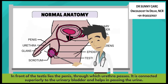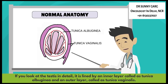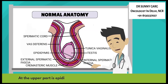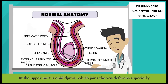The testes is connected superiorly to the urinary bladder and helps in passing urine through the urethra. Looking at the testes in detail, it is lined by an inner layer called the tunica albuginea and an outer layer called the tunica vaginalis. At the upper part is the epididymis, which joins the vas deferens superiorly.